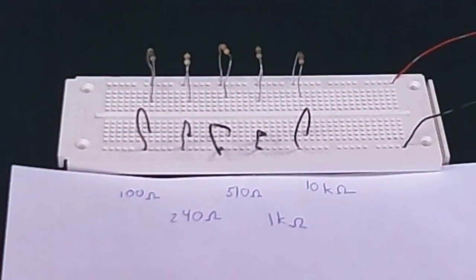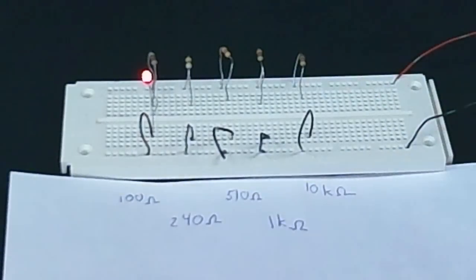So you see that the choice of resistor doesn't matter that much, as long as it's between about 100 ohms and 1 kiloohm. The important thing is that you have it there to limit the current, but the precise value isn't critical.